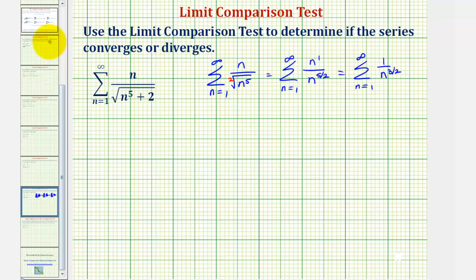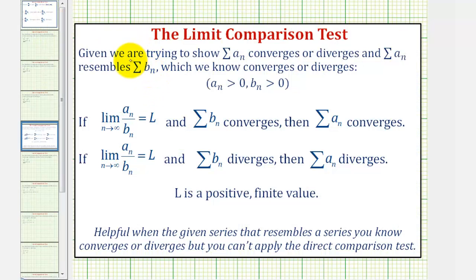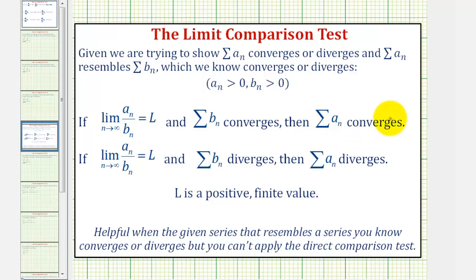To apply the limit comparison test, let the given series be the sum of a sub n and the comparison series be the summation of b sub n. If the limit as n approaches infinity of a sub n divided by b sub n equals L, where L is positive and finite, and the summation of b sub n converges, then the summation of a sub n also converges. If instead we compared to a divergent series and the limit was positive and finite, then the given series would diverge.